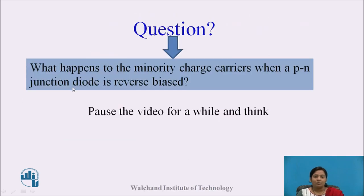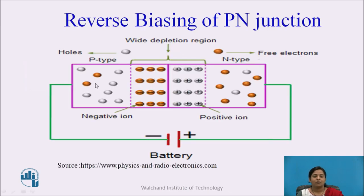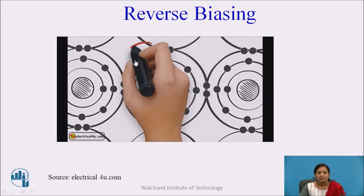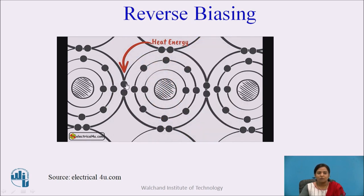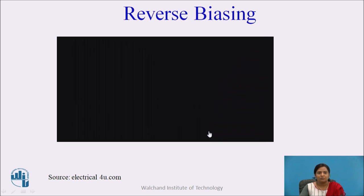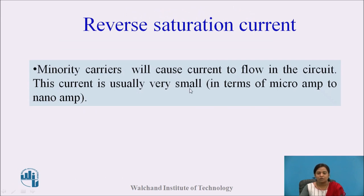A question: what happens to the minority charge carriers when the P-N junction diode is reverse biased? In reverse biasing, at the P-side there are minority charge carriers — that is electrons — and at the N-side, minority charge carriers — that is holes. Whenever heat energy is applied to the atoms, electrons from the valence band break the covalent bond with their parent atom and become free. The current that flows due to these electrons is called the reverse saturation current.